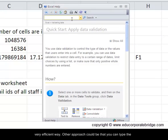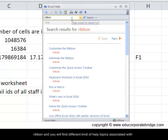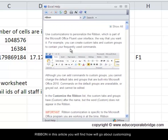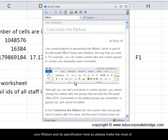Other approach could be that you can type the query in the search button here on the top and just press enter. So I'm typing ribbon because we have just learned what exactly is ribbon and you will find different kinds of help topics associated with ribbon which are there in these articles. So let's say I'll press customize the ribbon. In this article you will find how you can go about customizing your ribbon and its specifications here. So please make the most of the Excel help which is there. The shortcut is F1 from the function menu.